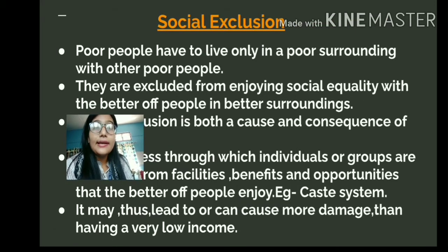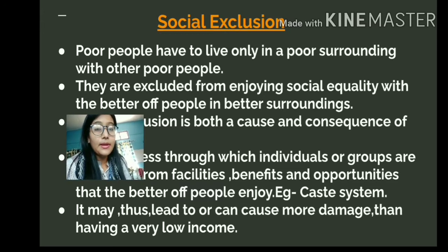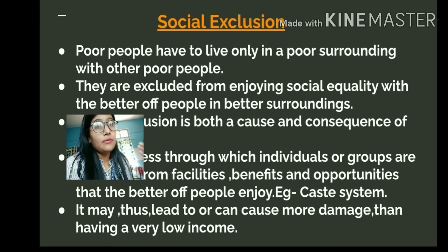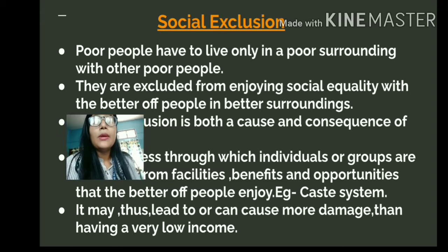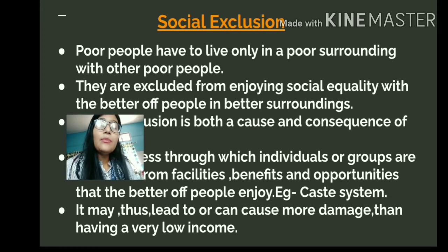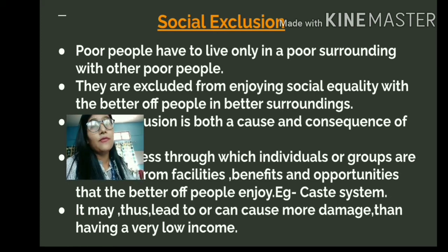Social exclusion is a process through which poor people are excluded from the society such that they have to live only in poor surroundings with other poor people. Poor people generally do not live in areas where the better-off or rich sections of society live. There is a separate corner for the poor in society, and all the poor people live in that corner.